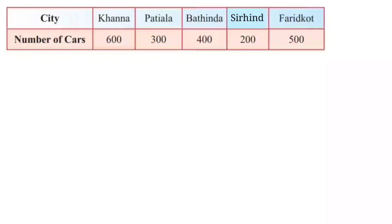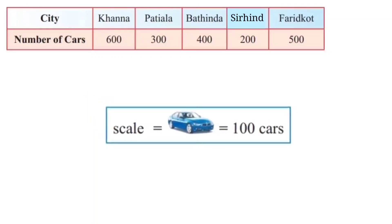For instance, the table shows the sale of number of cars in 5 different cities. Here, the figures are multiples of 100. Therefore, we can take a scale where 1 picture is equal to 100 cars.